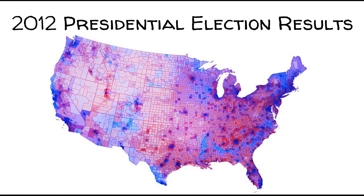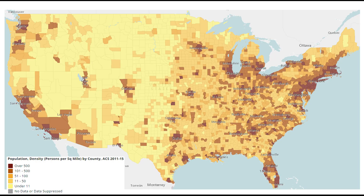So with so much red on this map, how did Obama win the election? This population density map by county shows that largely red areas have very low population density while largely blue areas have high population density. Since electoral college votes are based on state population, places like Los Angeles, New York, and Florida carry many electoral votes, while places like Idaho do not.